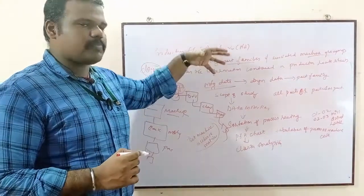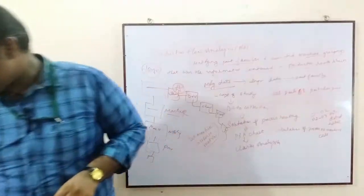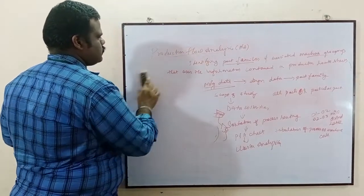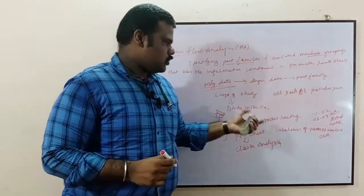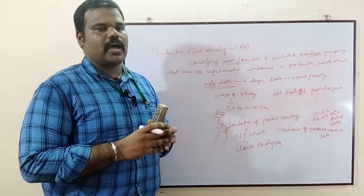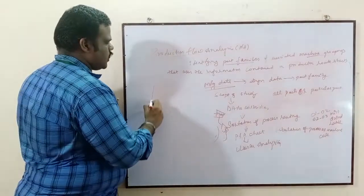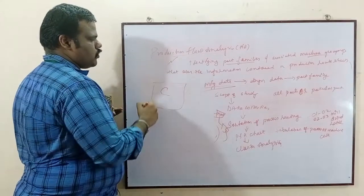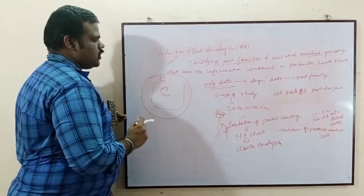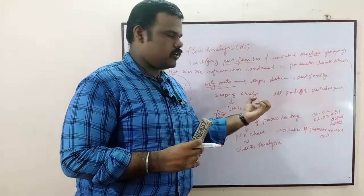By using a particular part family's manufacturing data, they will be analyzing what is required for the next product, say product B. There are certain steps in a production flow analysis. The first step is the scope of the study — why should I analyze this production flow analysis? Either for a particular part, or for the entire range of parts. For example, if I have to design a product called C, I need to decide the scope.